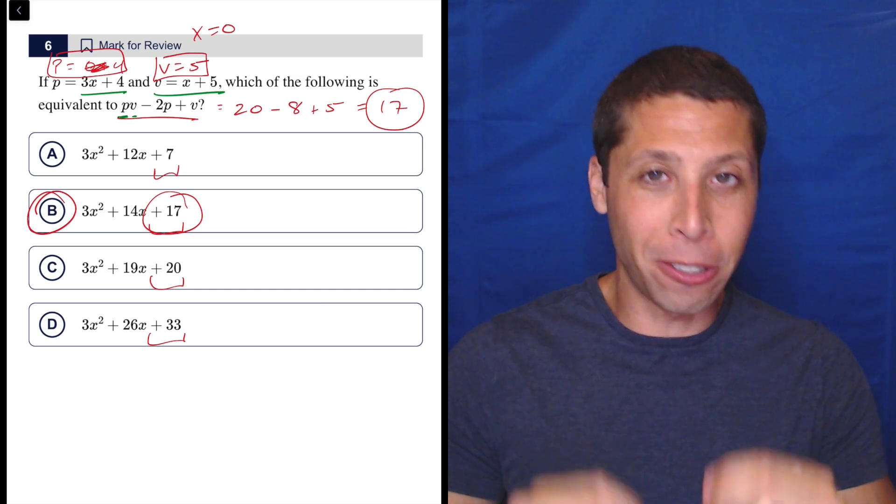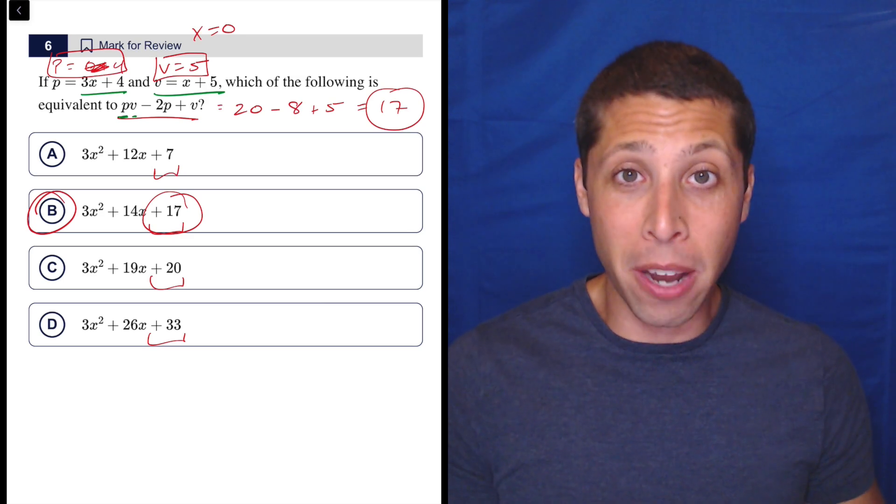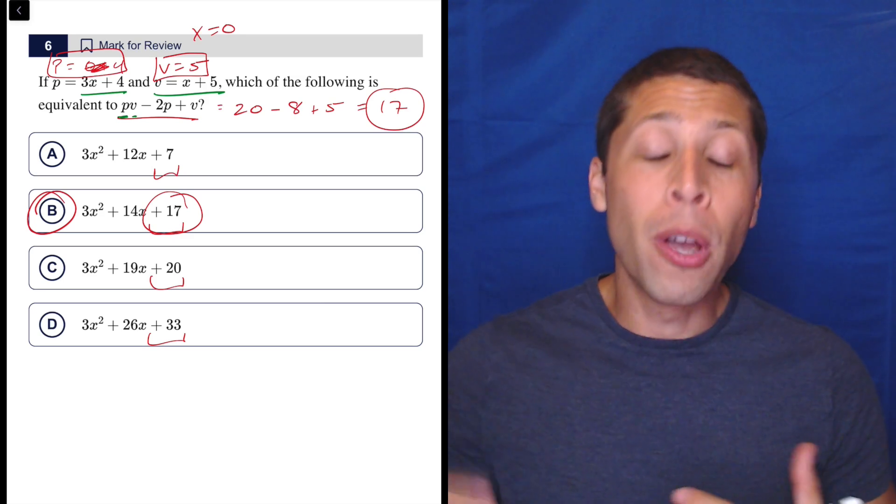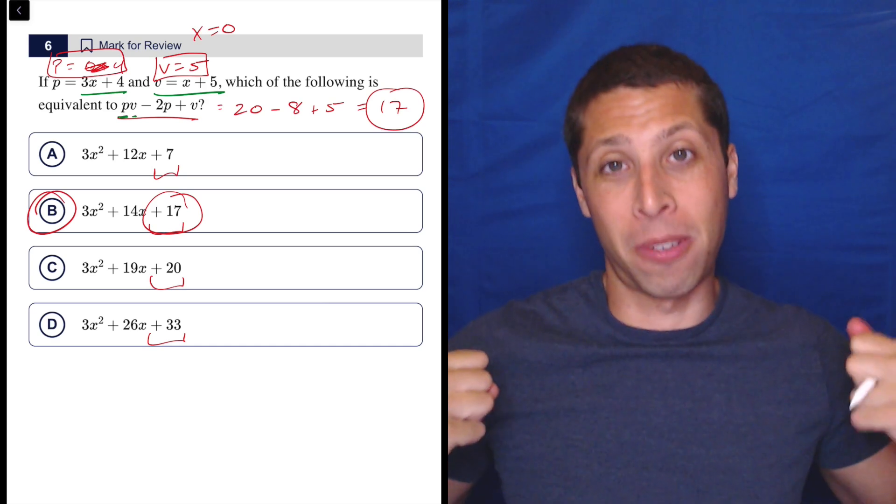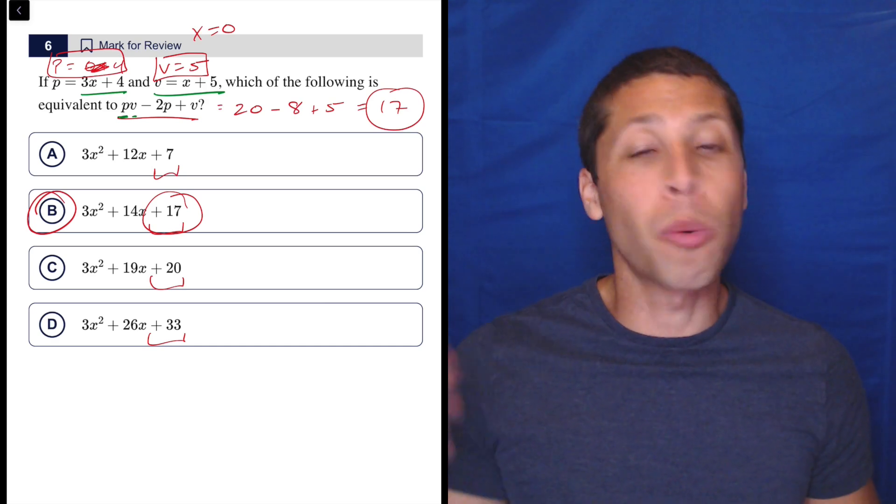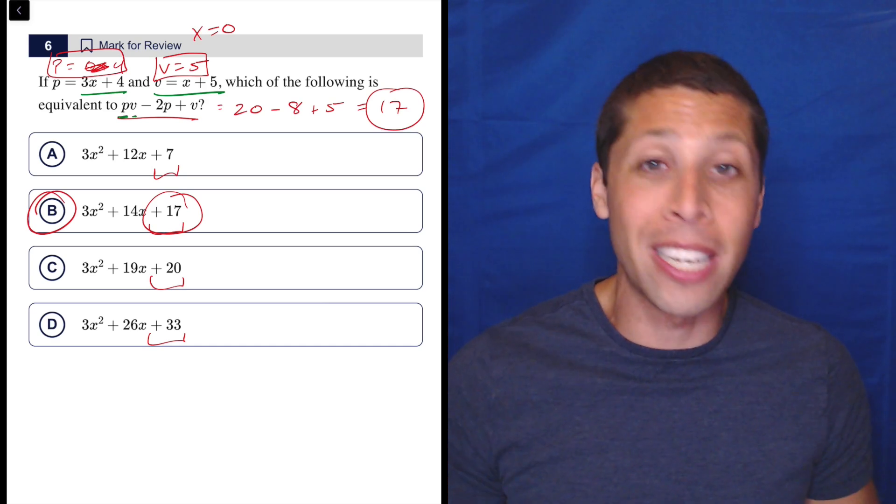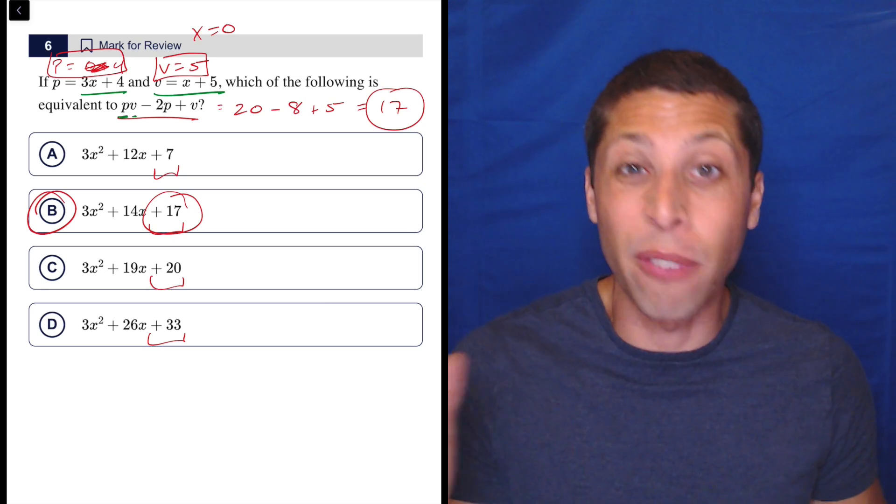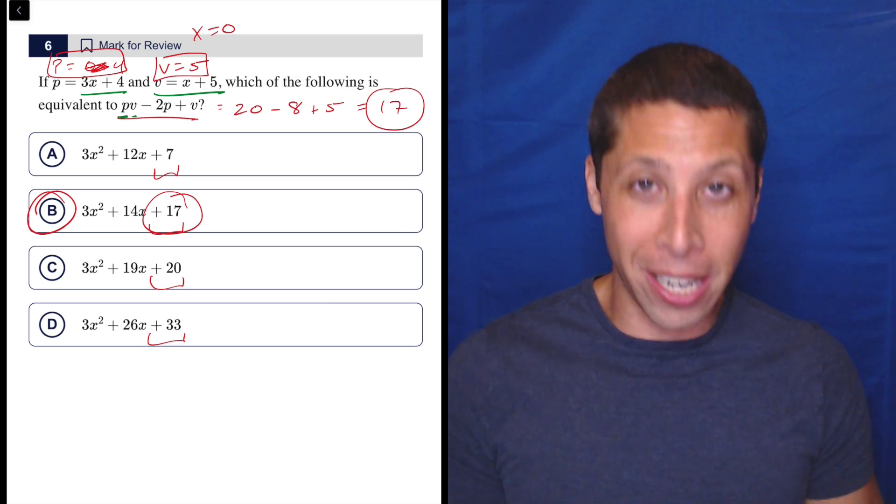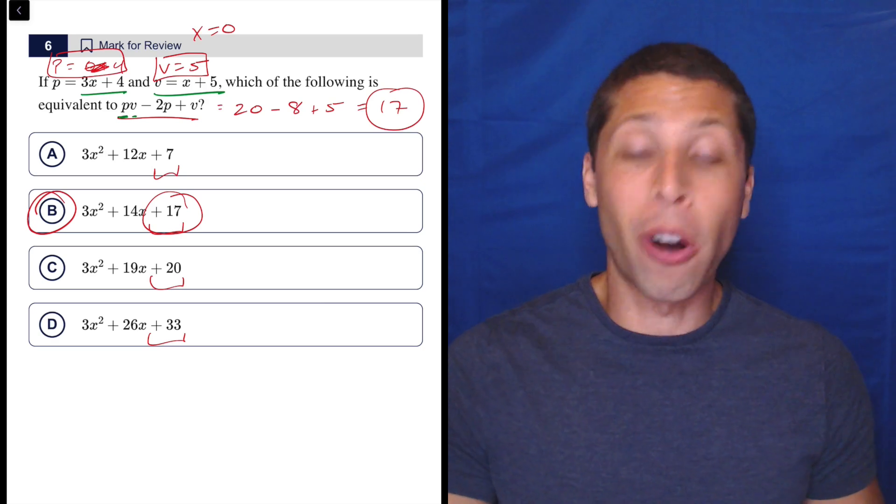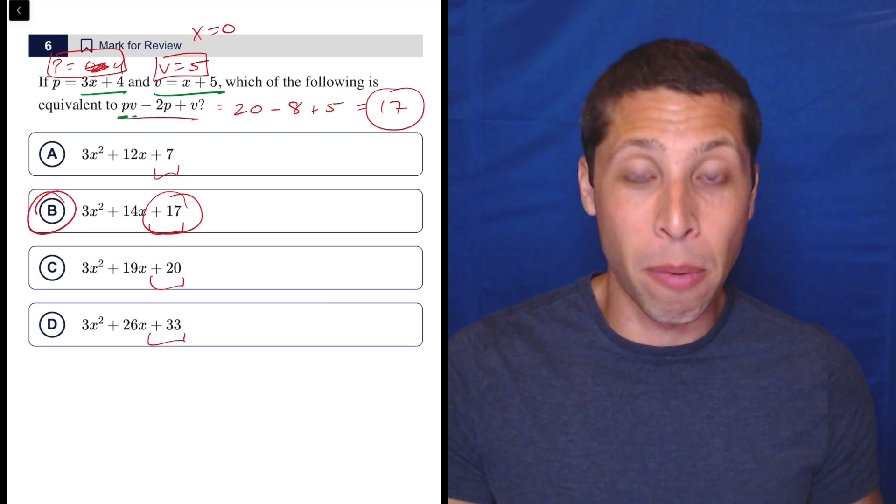is that not only are careless mistakes less likely when we have numbers, but if we do make them, we are more likely to notice them because our brain thinks in terms of numbers. It doesn't think in terms of algebra. That's why you learn algebra when you're like 13, 14, but you learn how to count on your fingers when you're like four years old, okay? You learn numbers sooner because our brain can handle them. Algebra, much harder, much more complex. So stay away from it whenever possible.